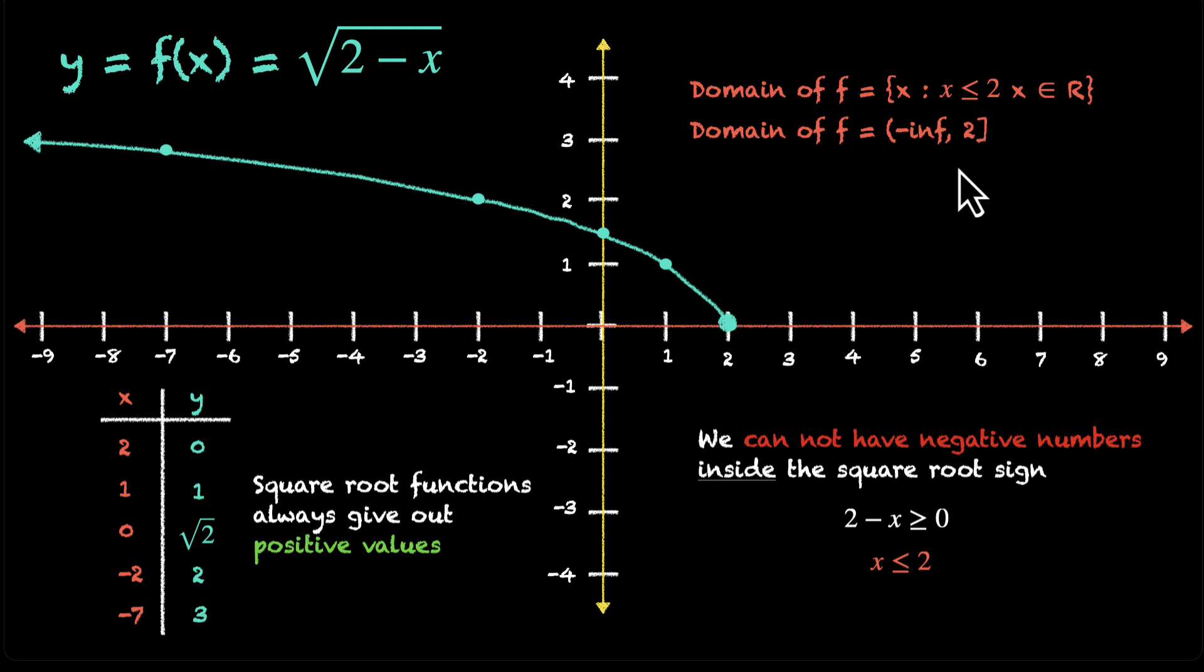What about the range? Range is all the values that you get from this relation. So what do you get on the y-axis? You get all the values from 0, that's the minimum value. And then the value increases. So you get 0 to infinity. So all values that are 0 and above are part of the range.